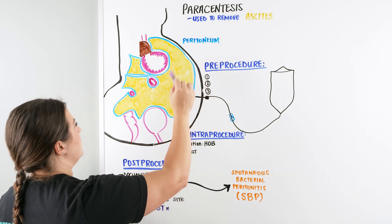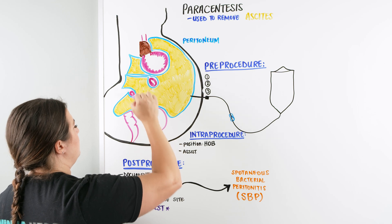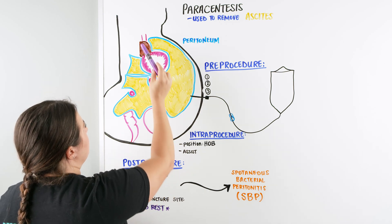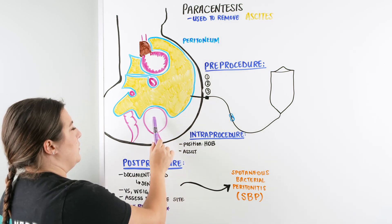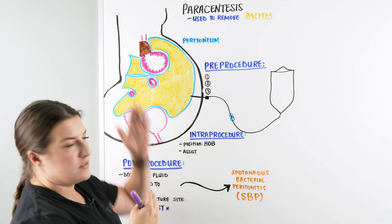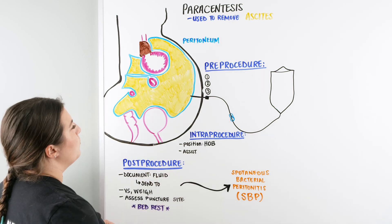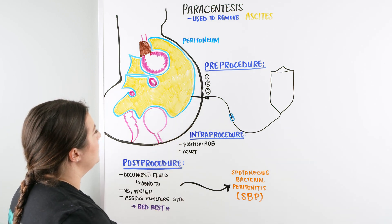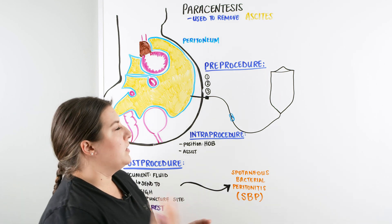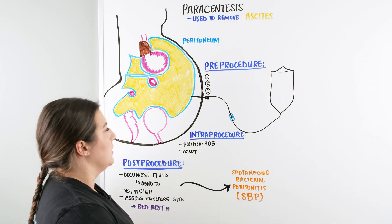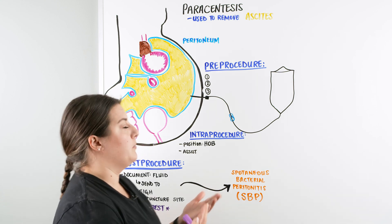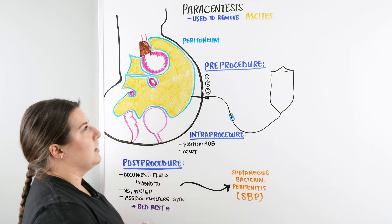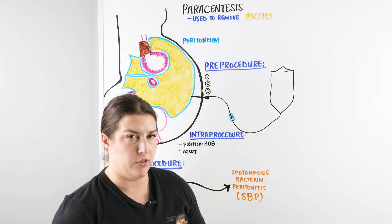The peritoneum is this cavity within our abdomen that helps line all of our vital organs — our stomach, large and small intestines, our liver, and down here our bladder and rectum. What we're looking at here is a slice of a person straight in half, and we're seeing the peritoneum filled with ascites. When our patient has all this fluid in their abdomen, we want to get it off because it's causing discomfort, pressing up onto the lungs, and causing trouble breathing. We also want to analyze that fluid to see if there's anything else going on.